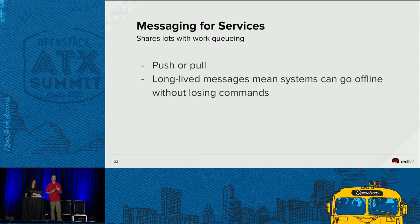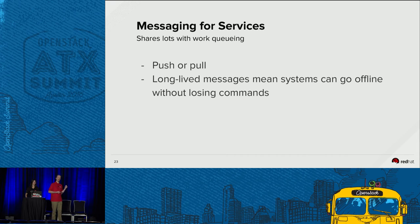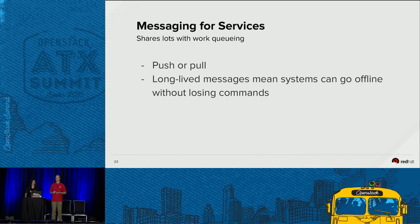In the service collaboration situation, you'd want a longer time to live. As Vicky mentioned, you can adjust TTL based on your use case. For user-facing notifications, you might have messages live only a few minutes — knowing that your Nova server from three weeks ago is ready isn't helpful if you get the notification three weeks late. But in service collaboration, you want to be sure that a service which goes offline can still get that message from Zakhar when it comes back, whether it was down for maintenance, upgrade, or something unforeseen.